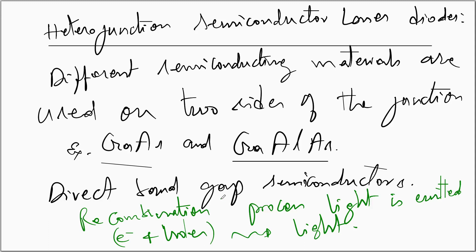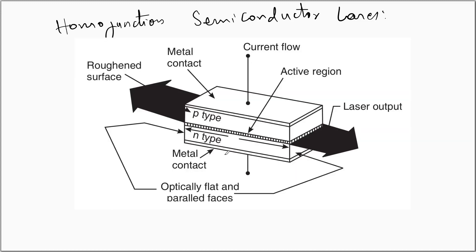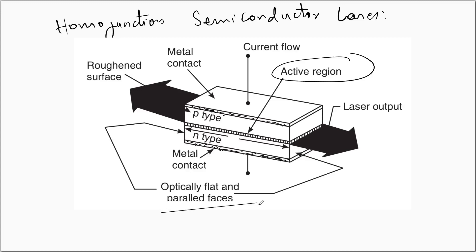The schematic diagram of the homo junction semiconductor laser shows the lowermost layer as the metal contact, over which we have the N-type semiconductor, then the P-type semiconductor, followed by another metal contact. These metal contacts are used to apply biasing to the junction. The junction is also referred to as the active region, where recombination takes place producing the laser. The two parallel surfaces act as optical resonators — they are optically flat and parallel faces, generally cut along the (100) plane. The semiconducting materials are heavily doped.